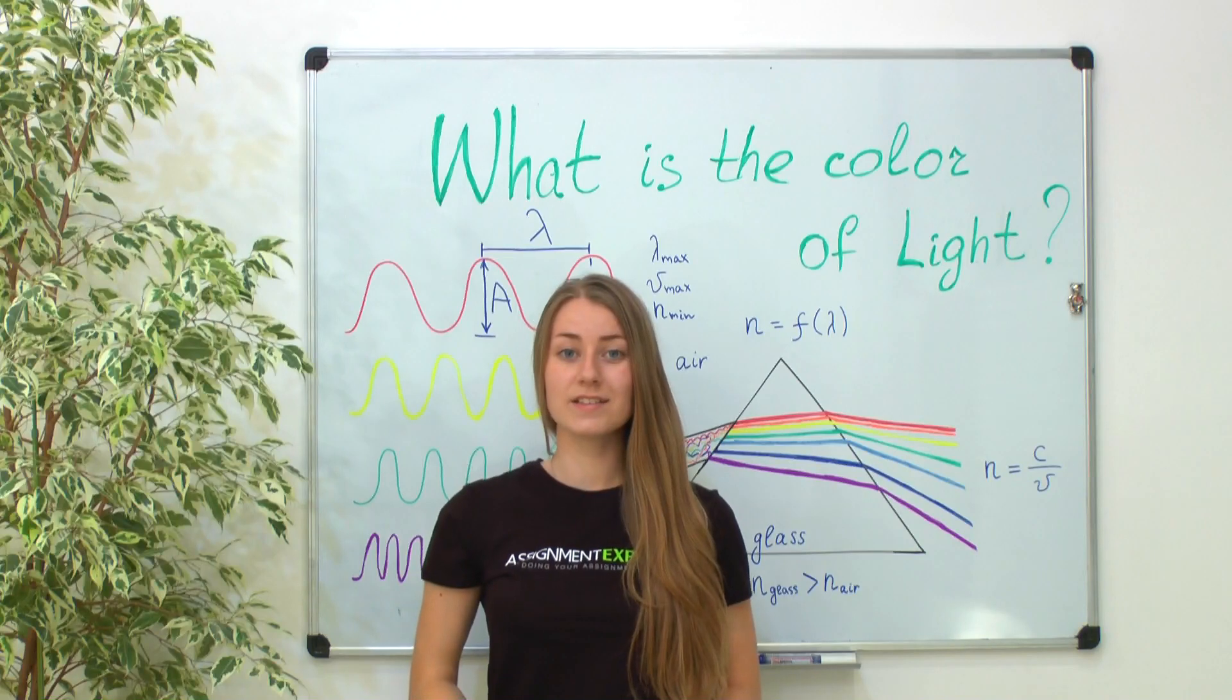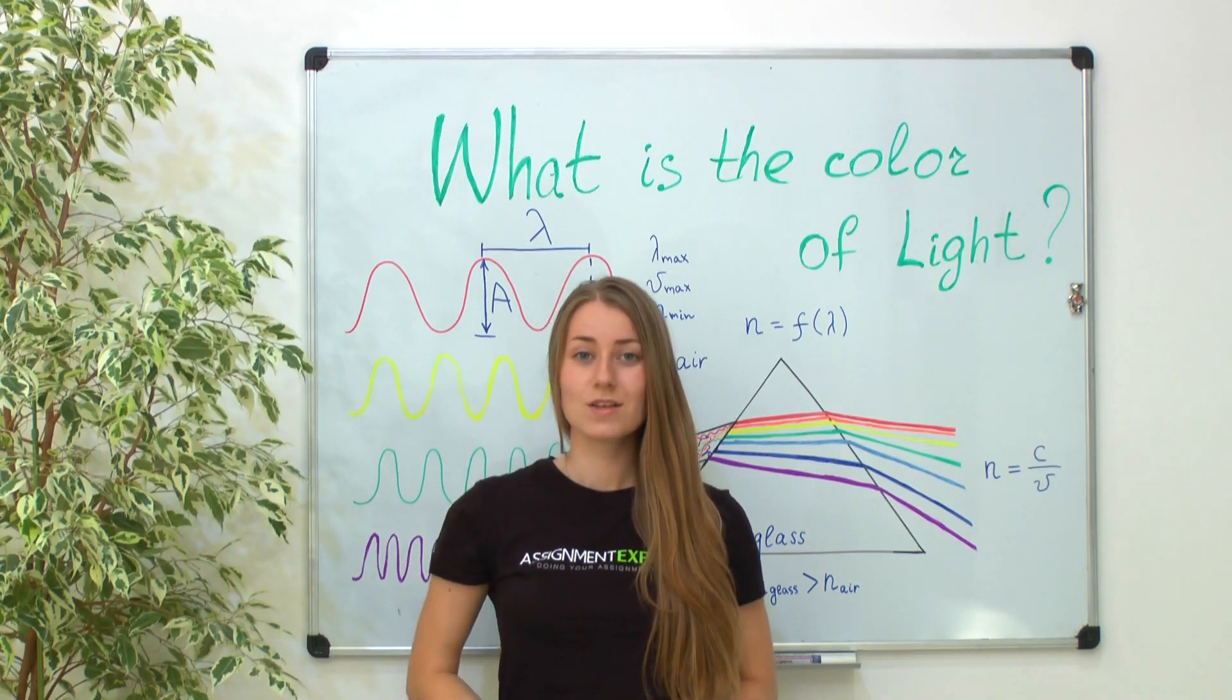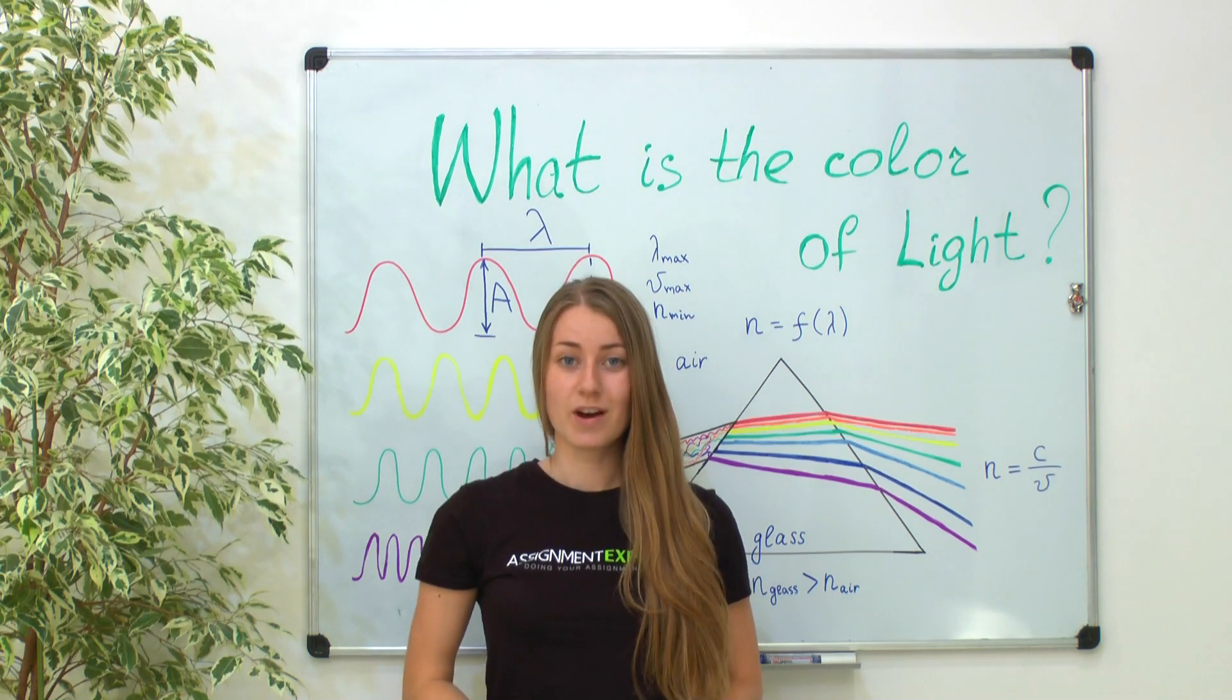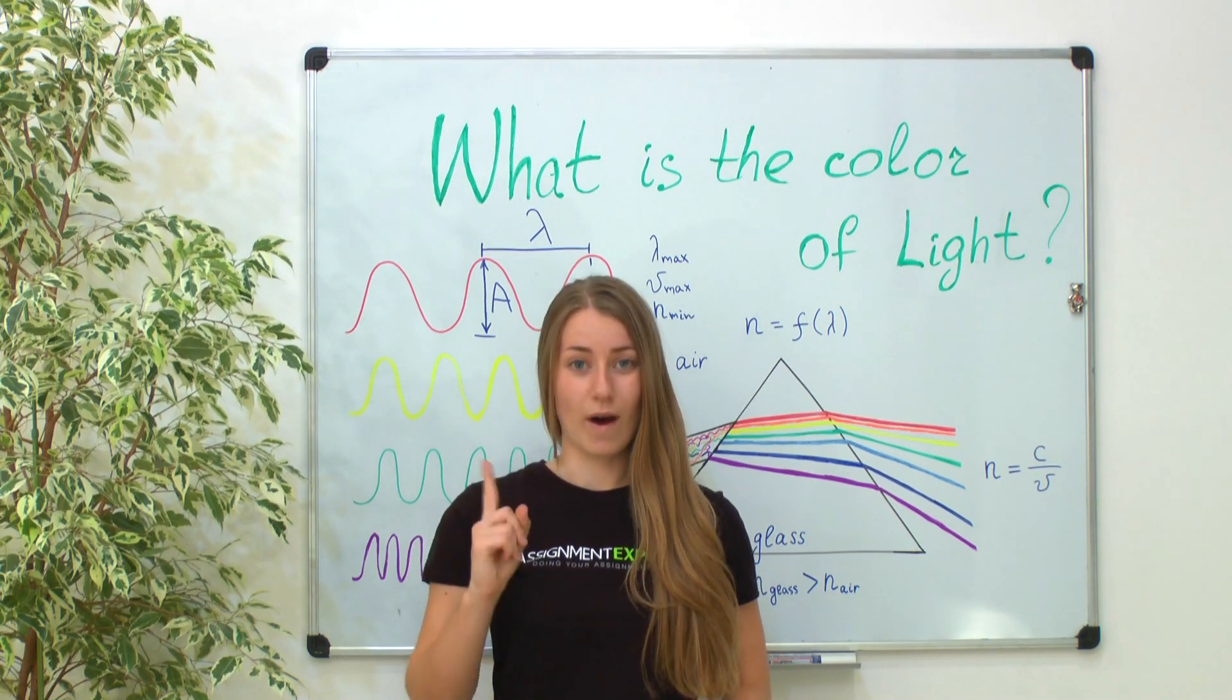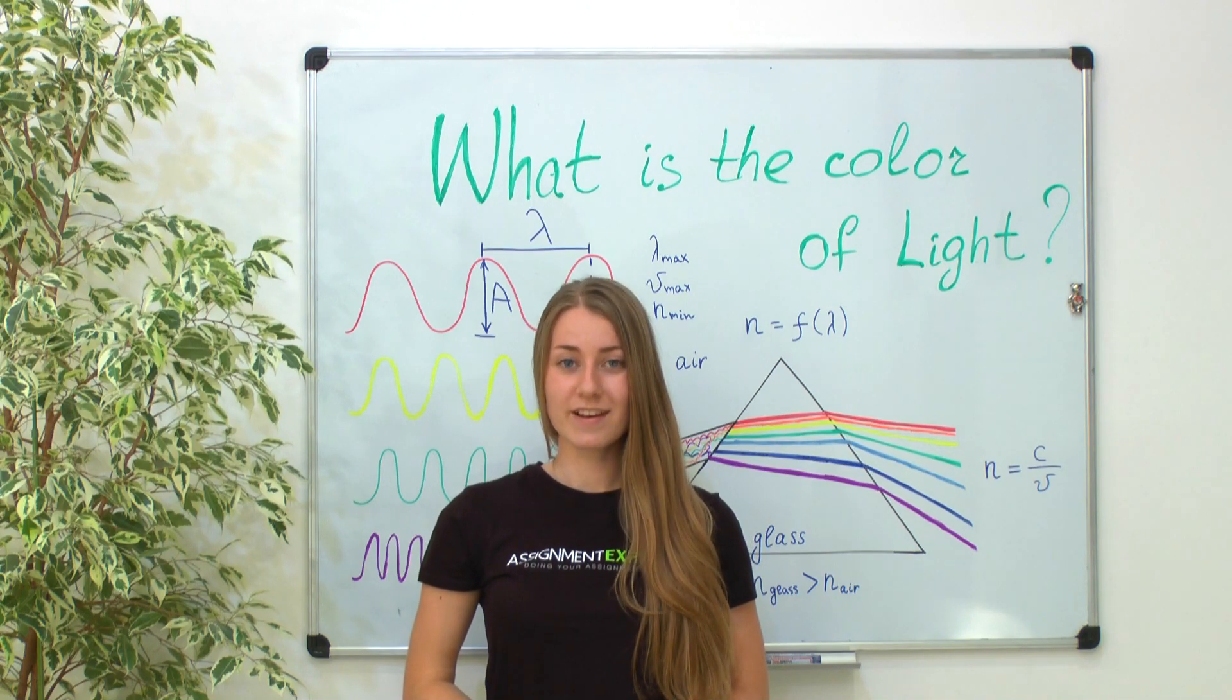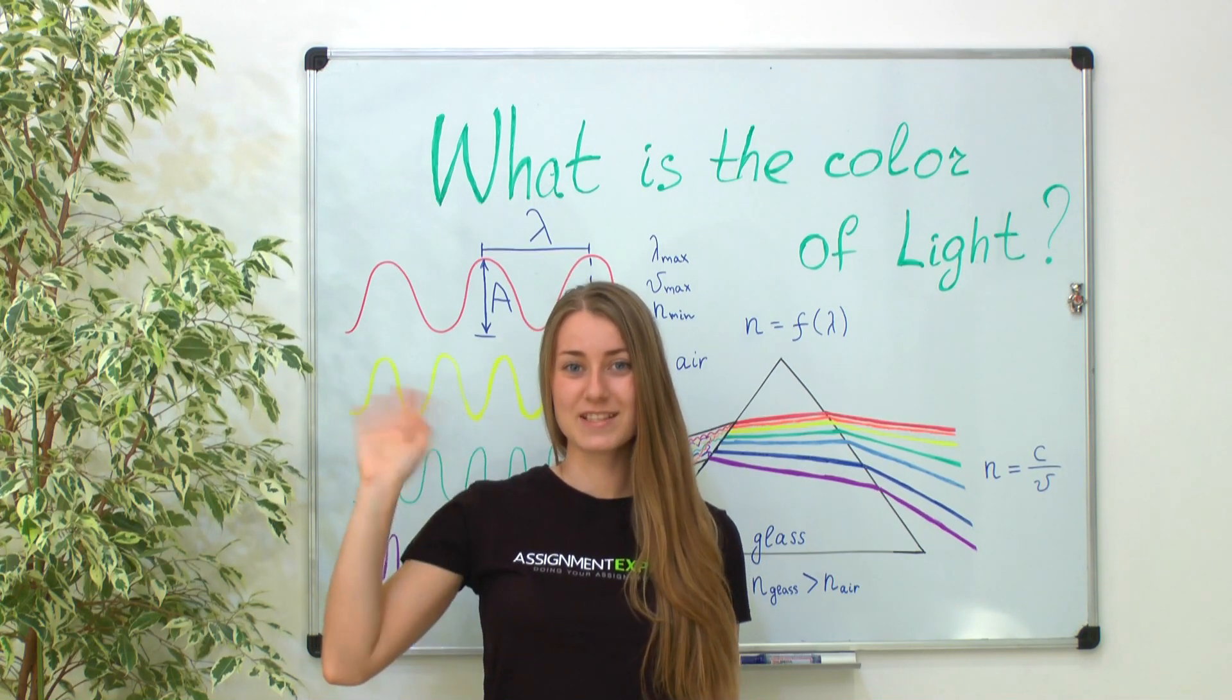Now you know that light is a mixture of wavelengths. So after all that information, what is the color of light? Sure, light is every color at once. Now thanks for watching, subscribe to our channel, and see you in the next videos. Bye-bye!